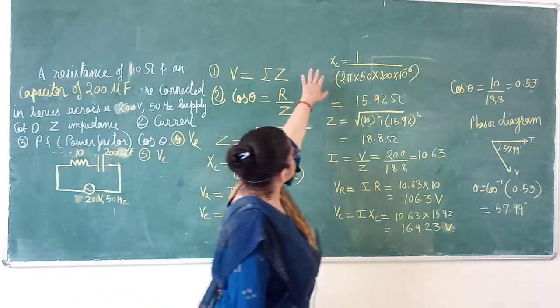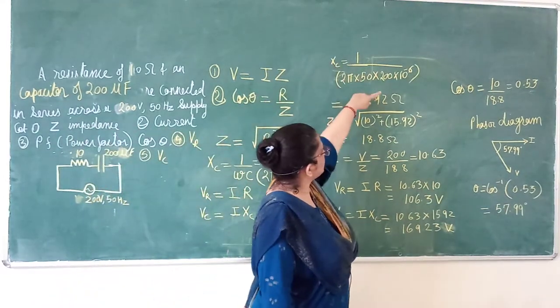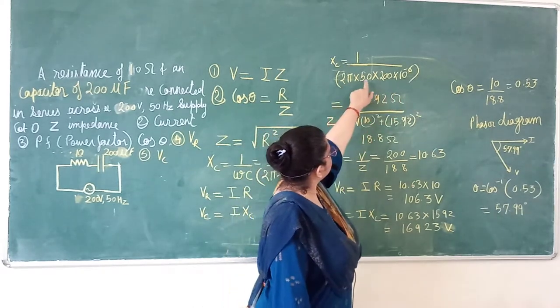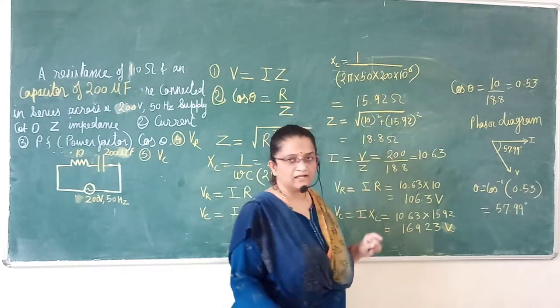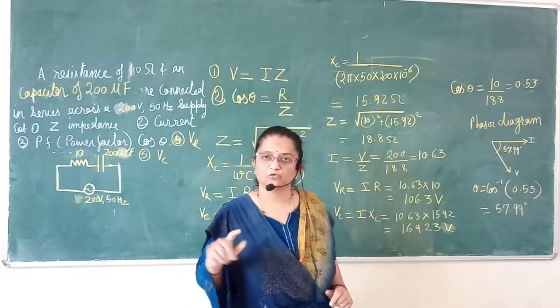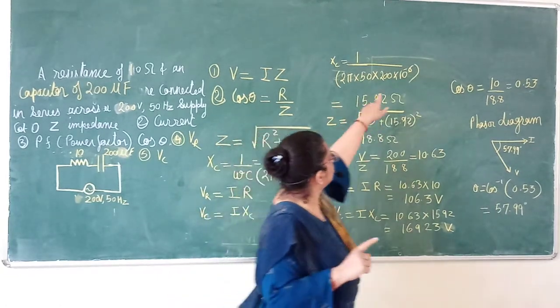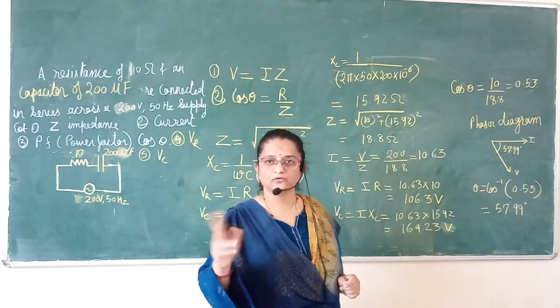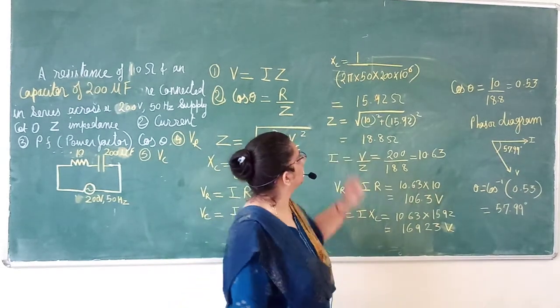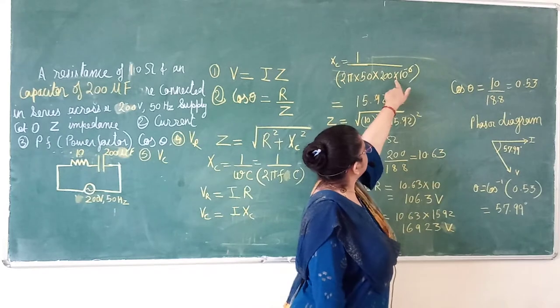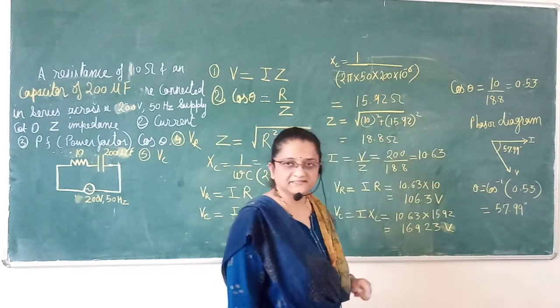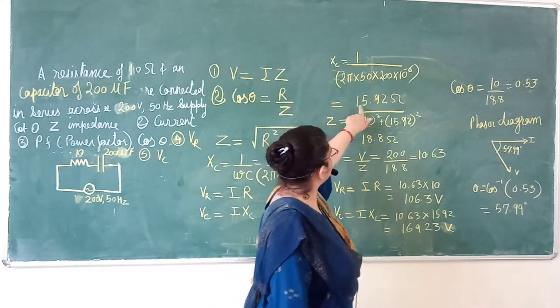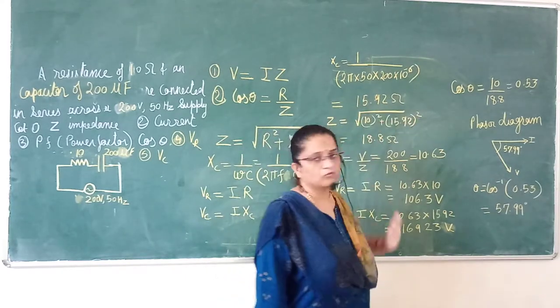So Xc is 1 upon omega C. Value is 2 pi into 50 into 200 micro, we have to convert to 10 raise to minus 6. Value Xc is equal to 15.92 ohms.